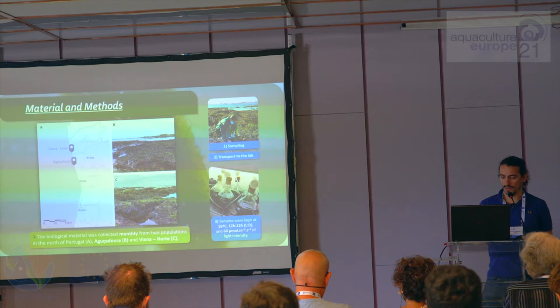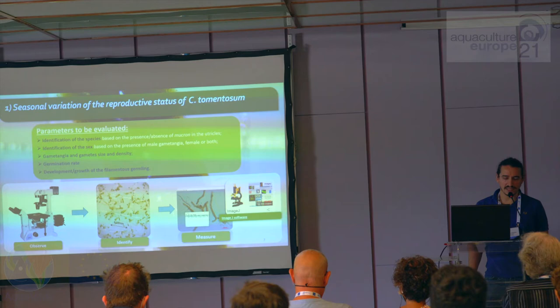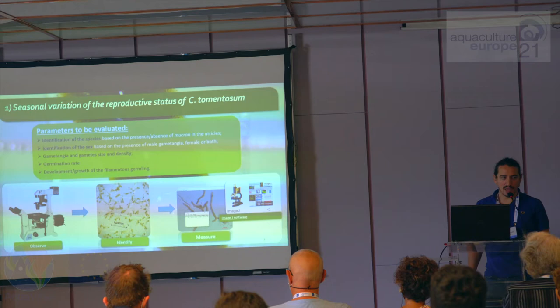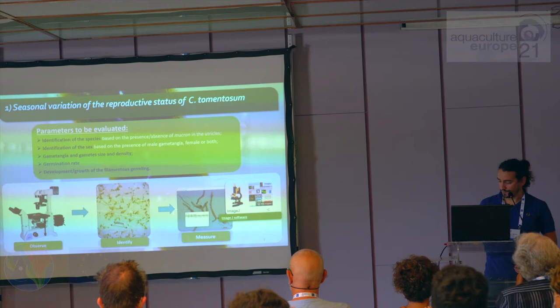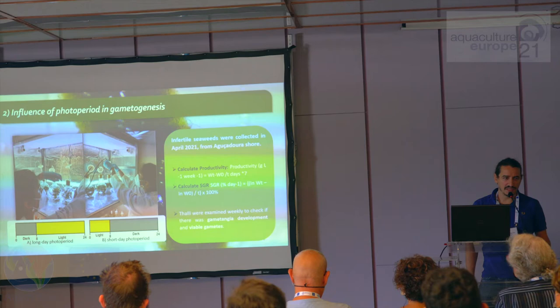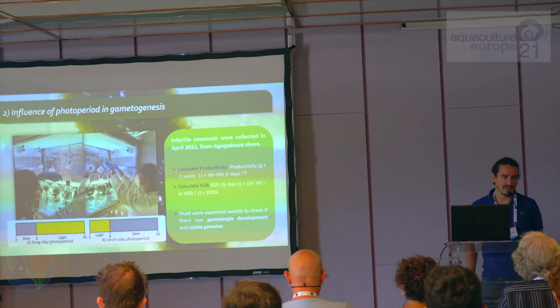The parameters we've been evaluating include species identification, identification of sex, gametangia and gamete size and density, germination rate, and development of these germlings — though I'm not presenting all of these parameters today due to time constraints. We're also interested in inducing gametogenesis: when we go out in the field and have infertile biomass, how do we induce the production of reproductive structures to obtain gametes from it.